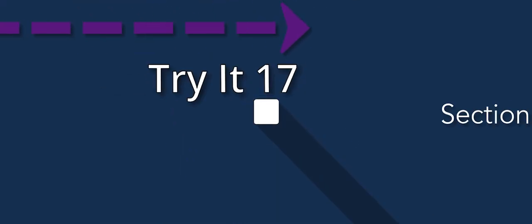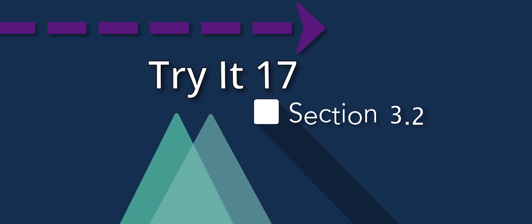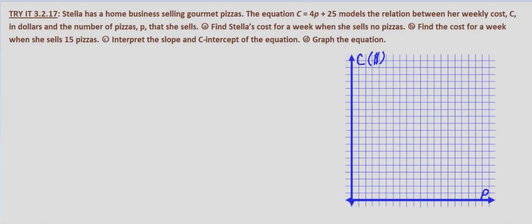In this problem we're examining a cost equation. We're given that Stella has a home business selling gourmet pizzas and that the equation C equals 4P plus 25 models the relation between her weekly cost C in dollars and the number of pizzas P that she sells.